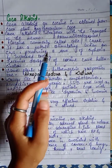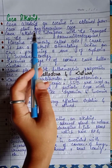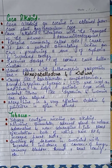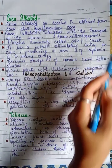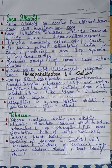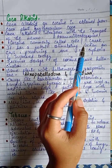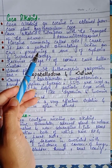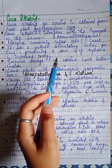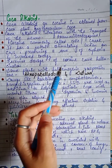Now, coca alkaloids. Cocaine is obtained from the coca plant, Erythroxylum coca. Coca alkaloids interfere with the transport of the neurotransmitter dopamine. Cocaine is commonly called coke and crack.